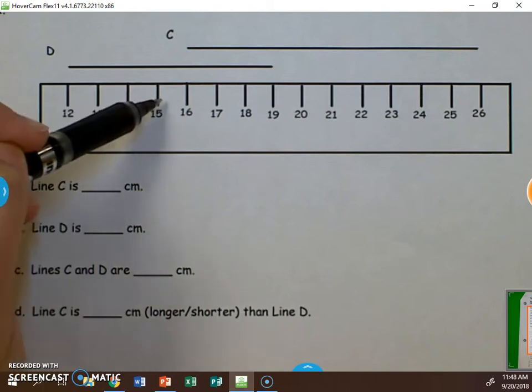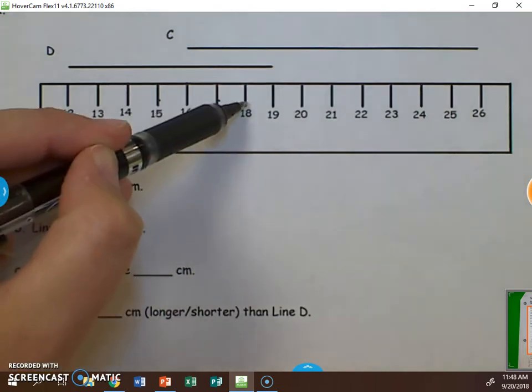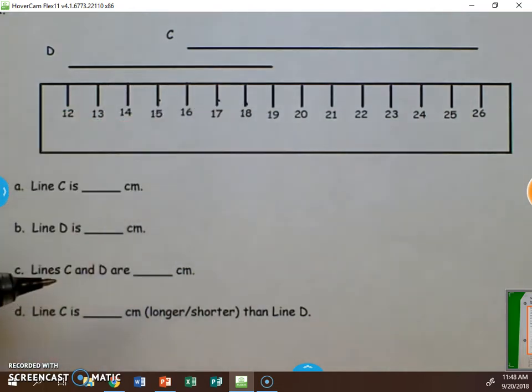One, two, three, four, five, six, seven. So line D would be seven centimeters long. You come down and put that in the blank.